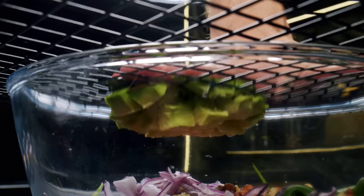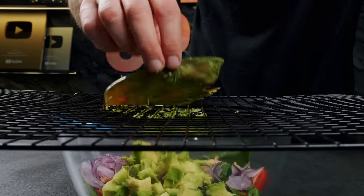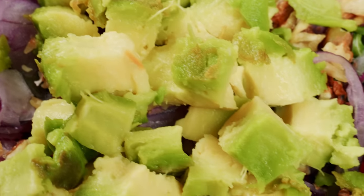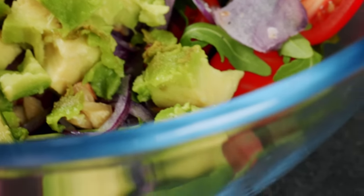Then place the halved avocado on the rack and gently press it through the grates. The peel will remain on the rack and smooth avocado cubes will be in the bowl. Finally, I add the cubes to my salad.